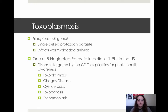Toxoplasmosis is one of the five neglected parasite infections, or NPIs, in the United States. NPIs are diseases that are targeted by the CDC as priorities for public health awareness. In addition to Toxoplasmosis, the other NPIs are Chagas disease, cystic tercosis, Toxokaryosis, and Trichomyoniases.